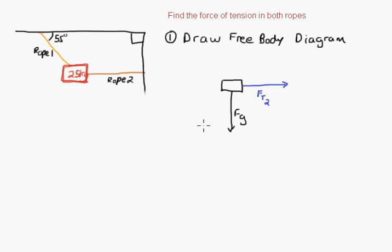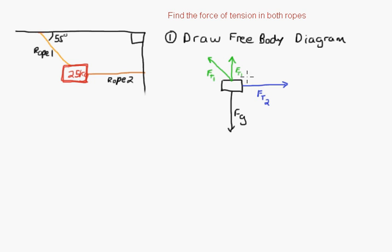My next force from rope one is going to be at an angle. We call that force tension one (FT1). I have to differentiate between the two ropes. Now the next thing you always do is split force tension one into the separate vector components — the vertical component FT1y and the horizontal component FT1x. The angle between them is 55 degrees.